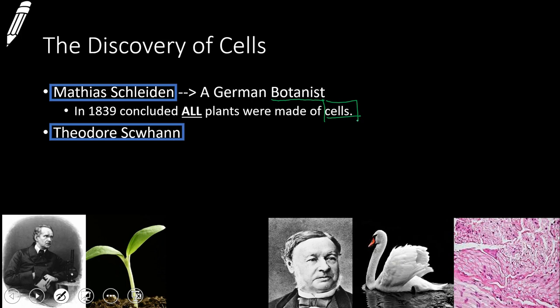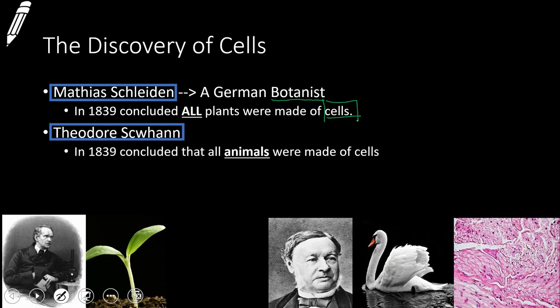Around the same time, we have another gentleman, Theodore Schwann. This gentleman studied animals, and every tissue of animals that he looked at, he discovered that all animals were made of cells. Now, it can be easy to get these two gentlemen mixed up — Schleiden and Schwann. The way I remember it: Schwann discovered animals were made up of cells, and 'Schwann' sounds like 'swan,' which is an animal. Schleiden is a funky-sounding name, kind of gross — and things that are gross are typically green, and plants are green. That's how I remember those two names.